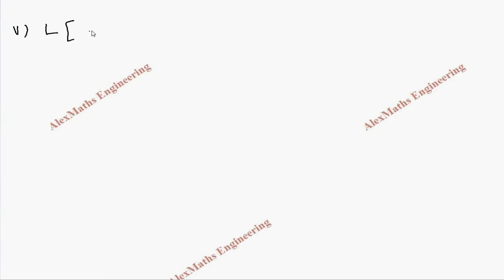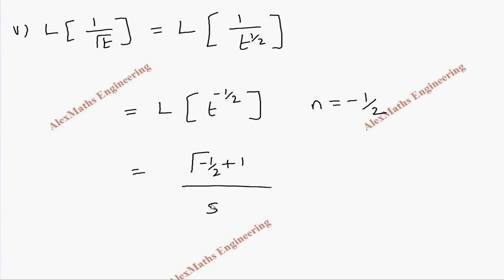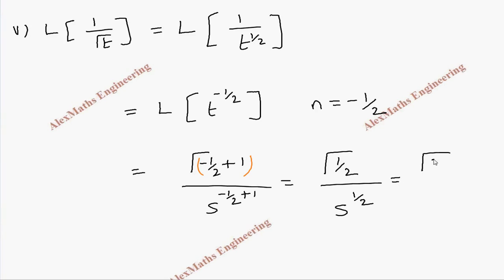For the next problem: Laplace transform of 1 by root t, which is Laplace transform of 1 by t to the power half. Taking this to the numerator gives t to the power minus 1 by 2, so n is minus 1 by 2. Applying the formula: gamma of minus 1 by 2 plus 1 divided by s to the power minus 1 by 2 plus 1, which simplifies to gamma of plus 1 by 2 divided by s to the power 1 by 2. Since gamma of 1 by 2 equals root pi, the answer is root pi divided by s to the power 1 by 2.